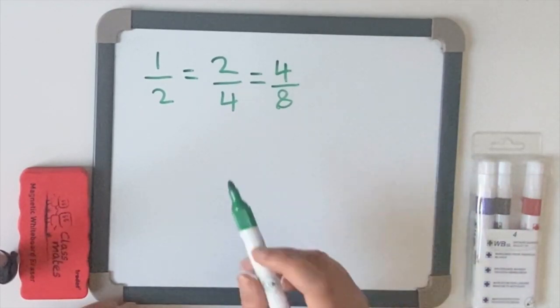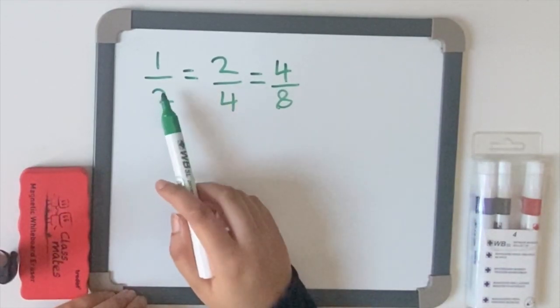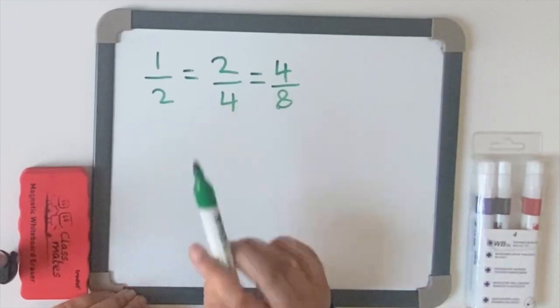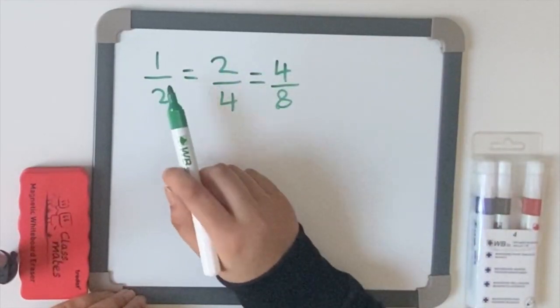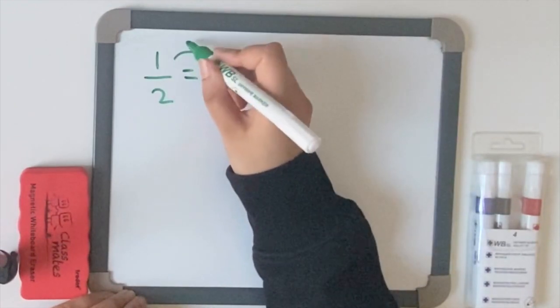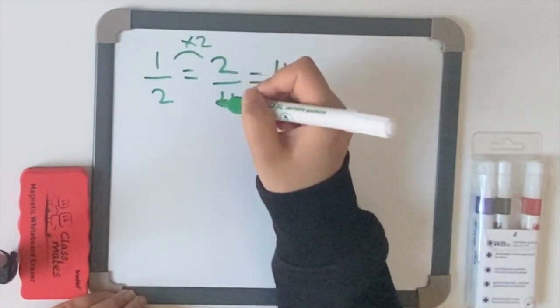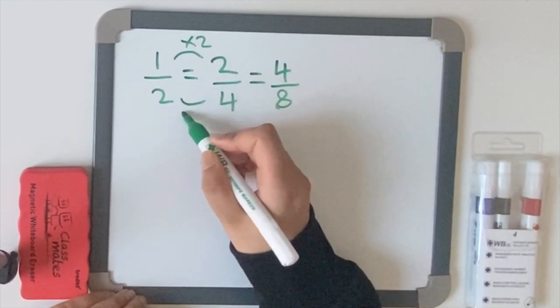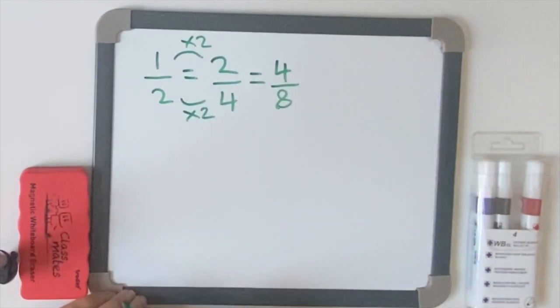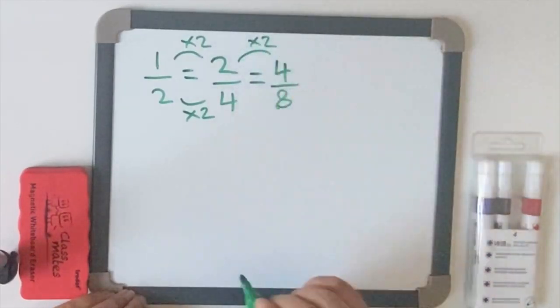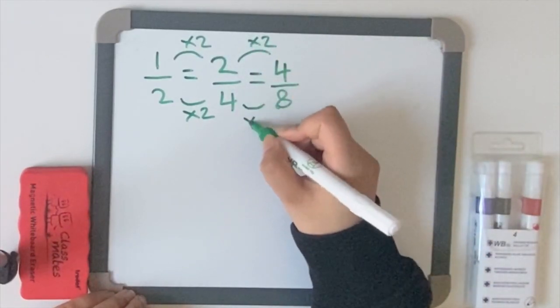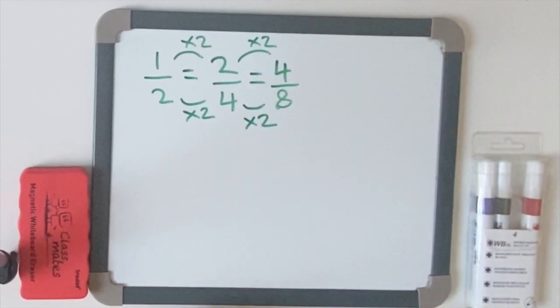For example, let's have a look at this one. How is a half the same as two quarters or two fourths? So let's see what goes into one and two. If you do one times two equals two, what you do to the top, you must do to the bottom. Two times two equals four. And then you must do the same again. Two times two equals four. Four times two equals eight. That's how you work out an equivalent fraction.